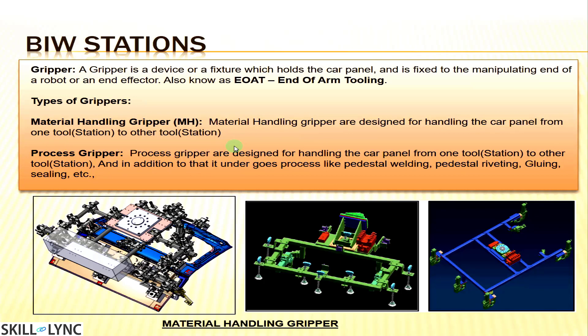There are different types of grippers. A material handling gripper is designed for handling the car panel from one tool to another tool — it picks the car panel from one station and drops it to another station. A process gripper is designed for handling the car panel from one station to another and in addition it undergoes processes like pedestal welding, pedestal riveting, or gluing.